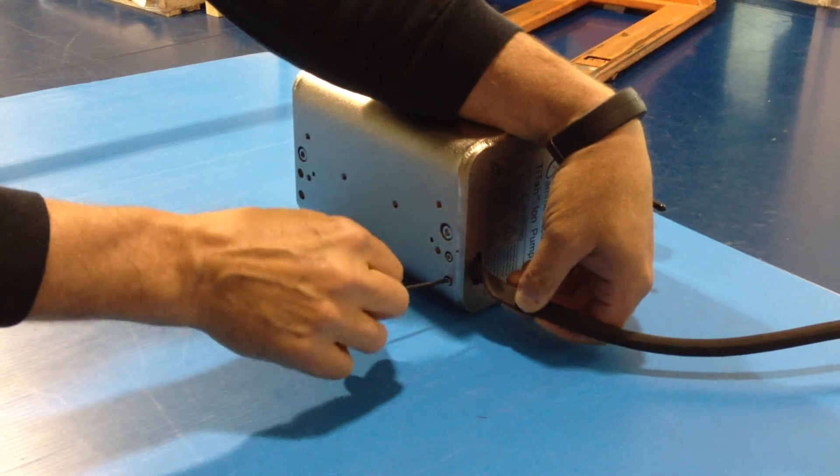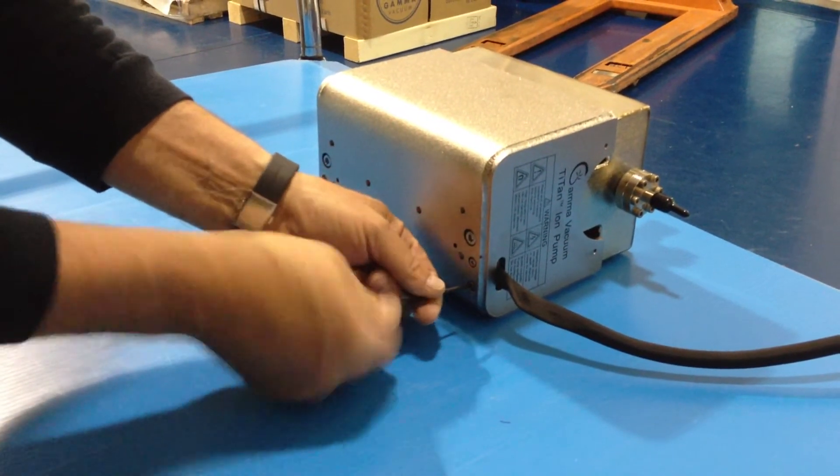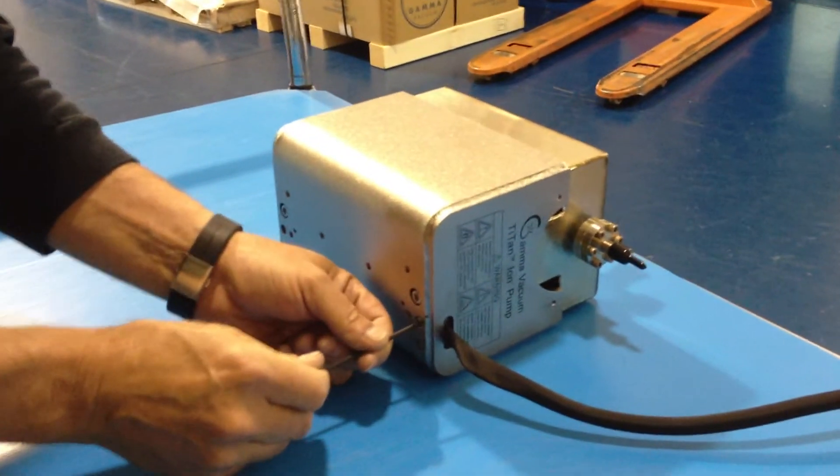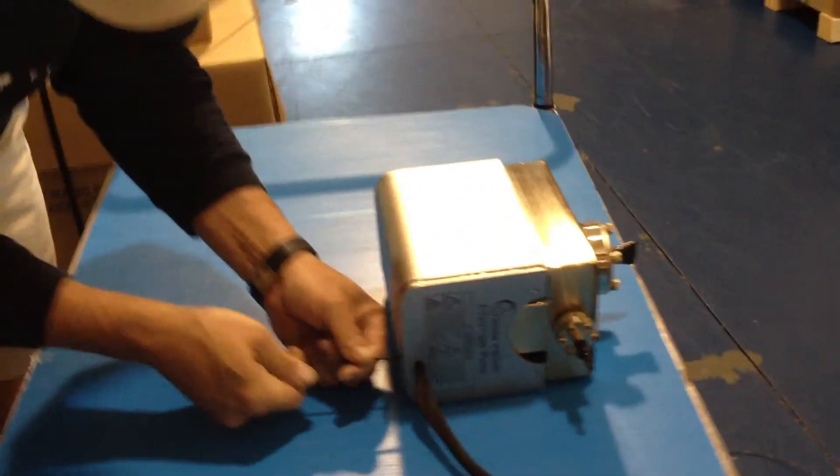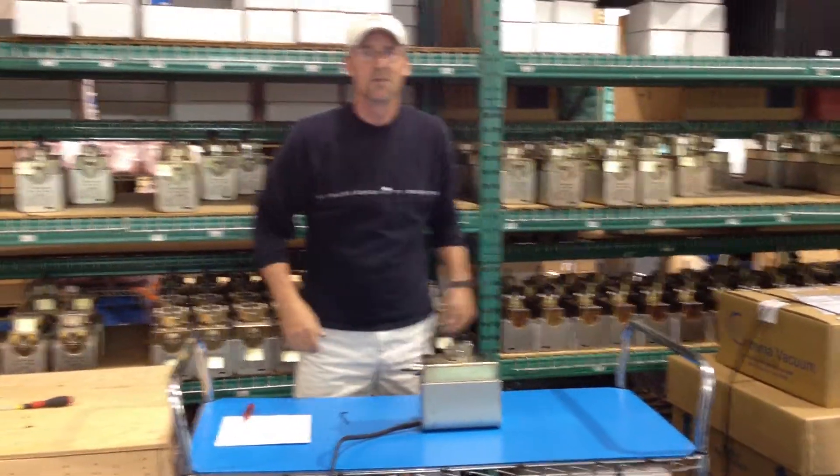And then go ahead and tighten that down with your 7/64ths hex Allen wrench. There you have it. 145S on the new heater.